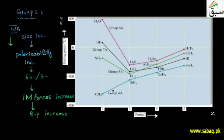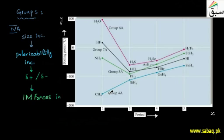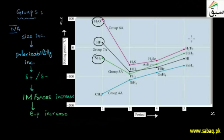The same reasoning applies to the other groups. However, worth noting is the case of ammonia (NH3), HF, and water (H2O). Unlike the regular trend seen with methane (CH4), in these three cases the boiling point is first high, then decreases, then increases again going down the group. The reason is hydrogen bonding.